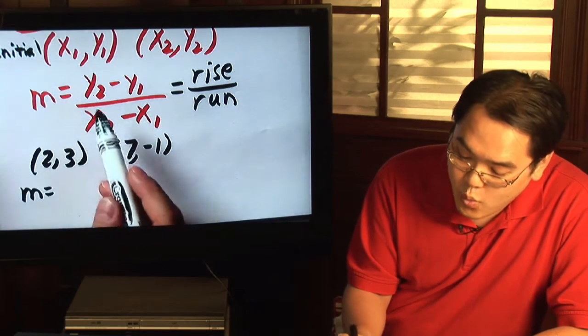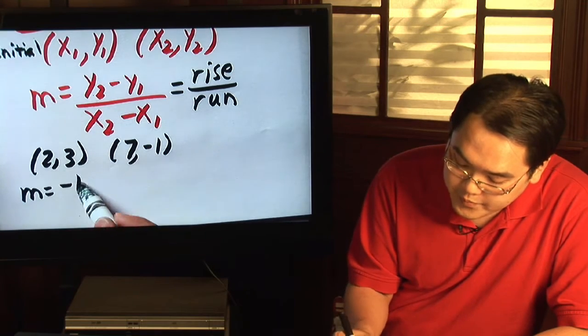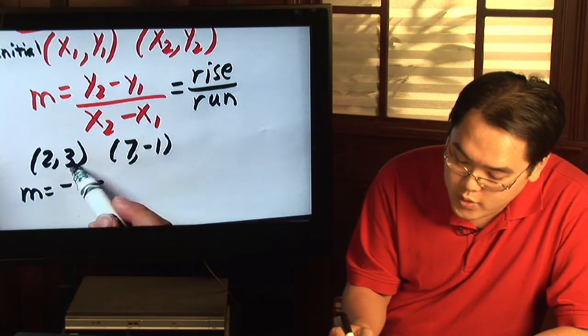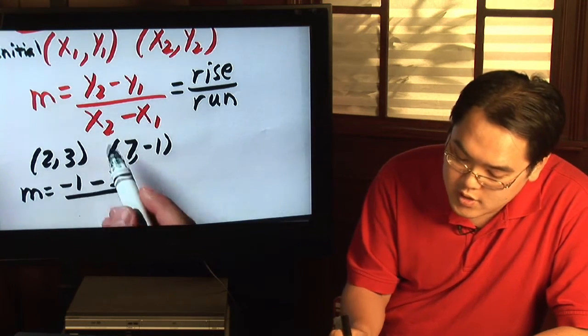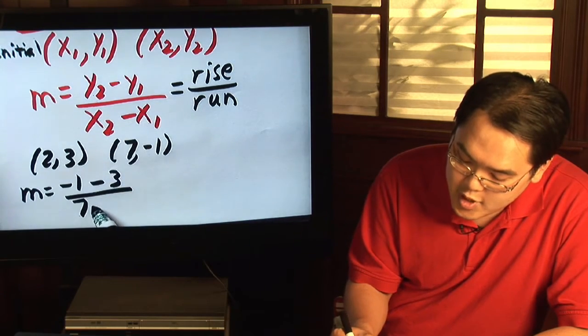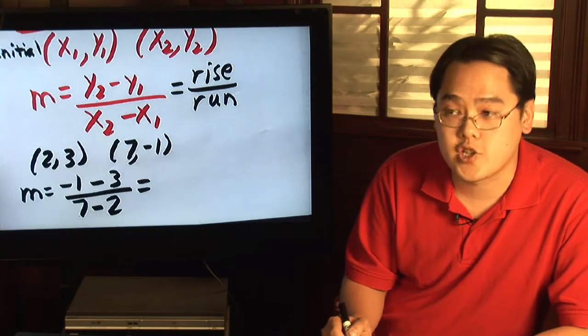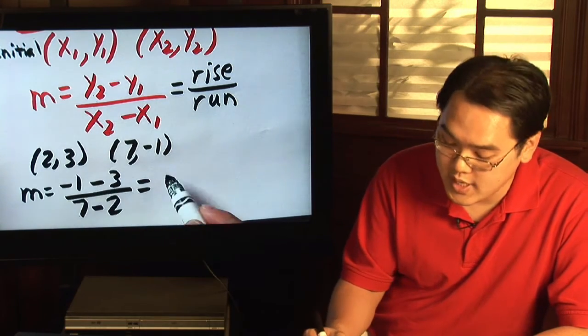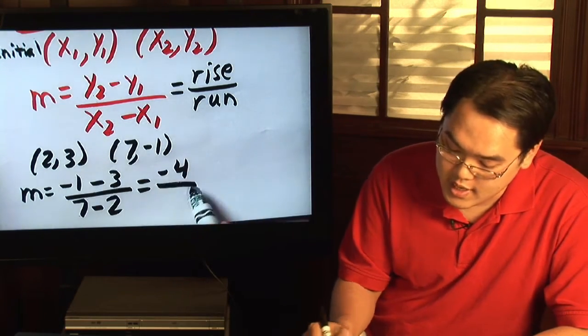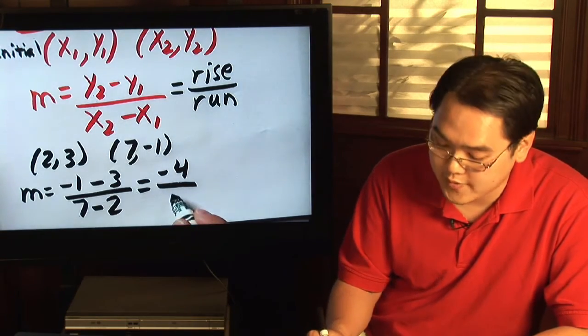So you have y2, which is negative 1, minus y1, which is 3, over x2, which is 7, minus the x1, which is 2. So just do the subtraction. Negative 1 minus 3 is negative 4, and 7 minus 2 is equal to 5.